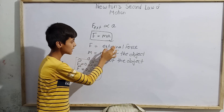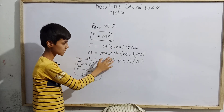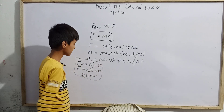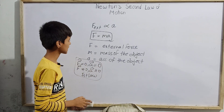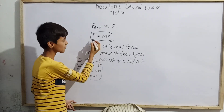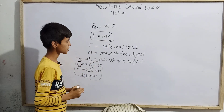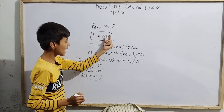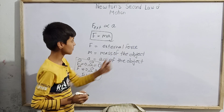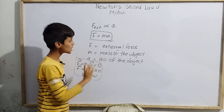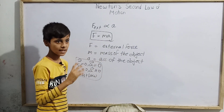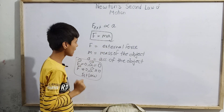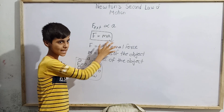So here F is external force, M is mass of the object, and A is acceleration of the object. F equals MA means force equals mass times acceleration. When a non-zero force is applied, acceleration will also be non-zero, and we can find the magnitude of the external force applied over any object through this formula.